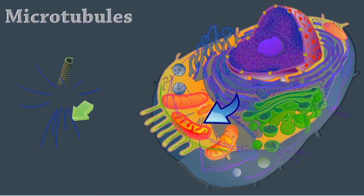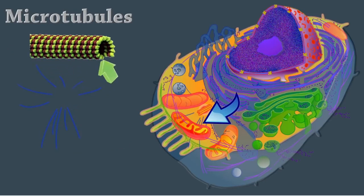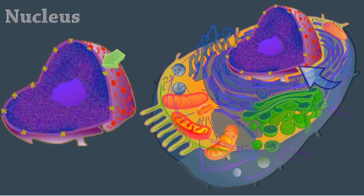Microtubules are cylindrical structures made of tubulin proteins. They support the cell and give it shape. They're involved in intracellular and cellular movements and form centrioles.